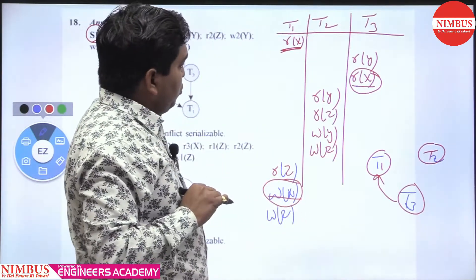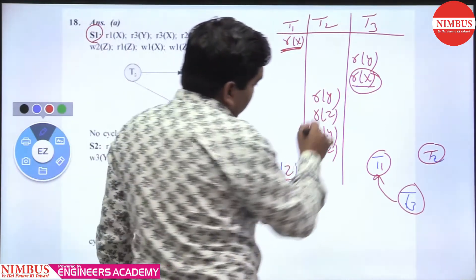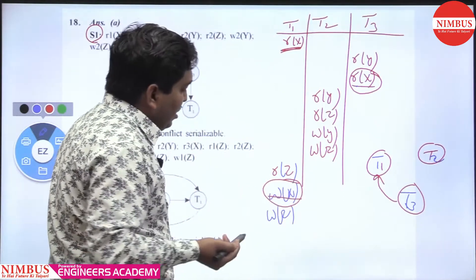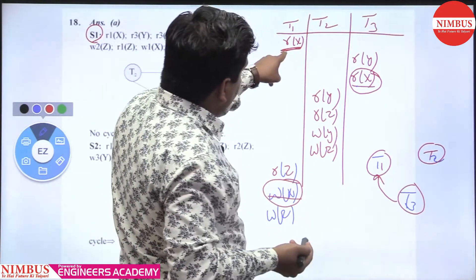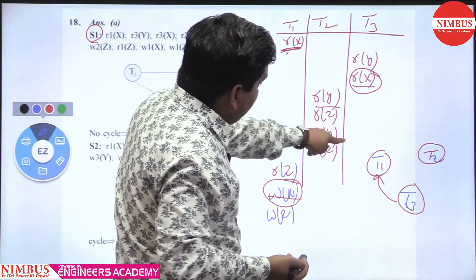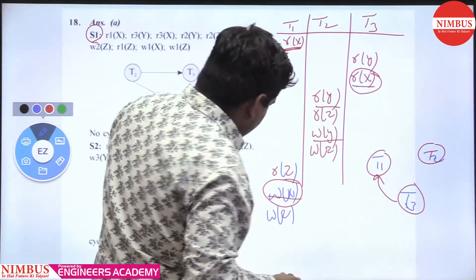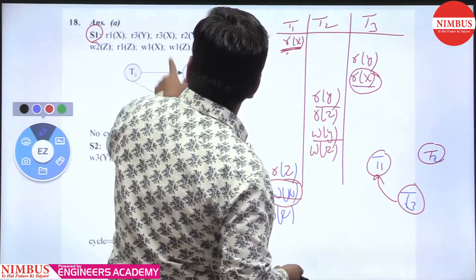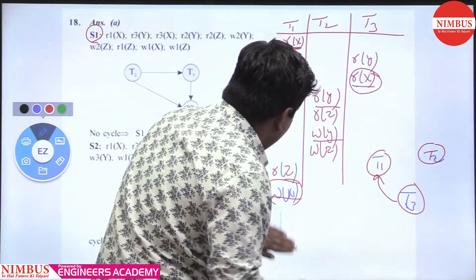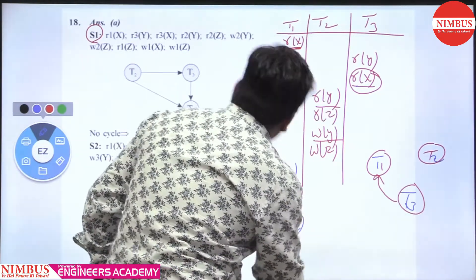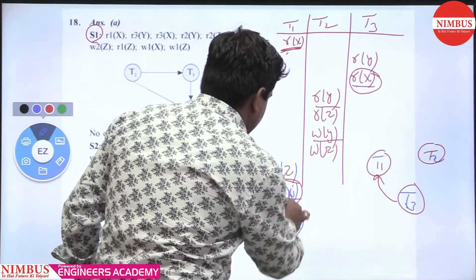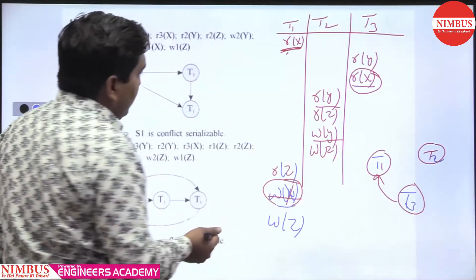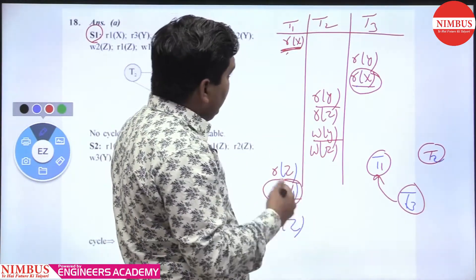Check between T2 and T3 for X: T2 has no read X, only write X, so skip. For Y, check T1 to T2: there is no Y in T1 — T1 has no read Y or write Y. This is write Z (W1Z) and read Z. So there is no edge between T1 and T2 for Y.